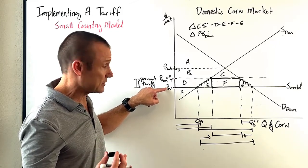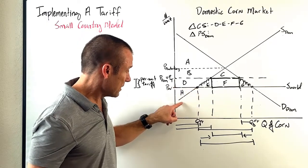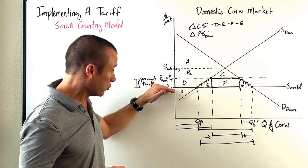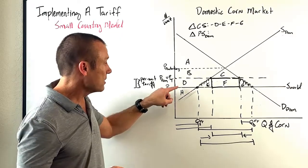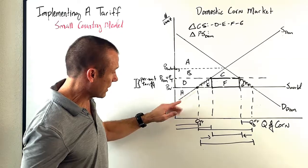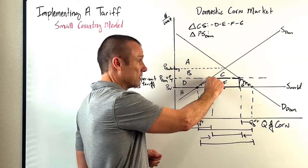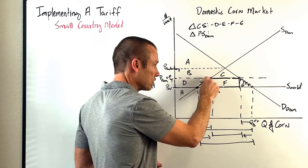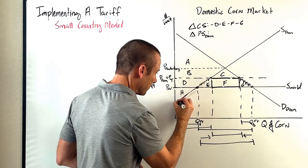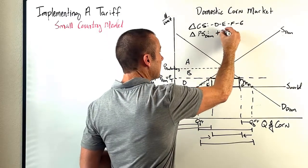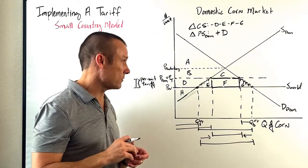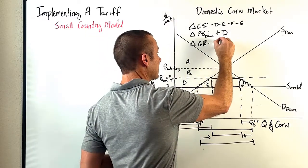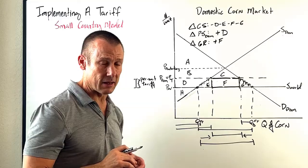Change in producer surplus: before the tariff, domestic producers were getting just area H, since price world was the prevailing domestic price — their marginal private cost curve sits below that. Now that price domestic has gone up and the tariff does not apply to their goods, they're getting H plus D. So they gained D. Change in government revenue: they were getting zero, now they're getting plus F — that's the tariff revenue rectangle.